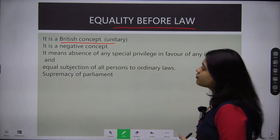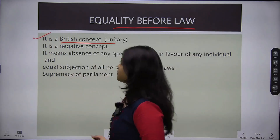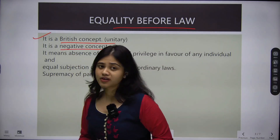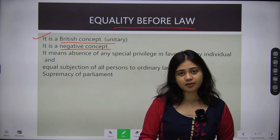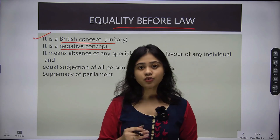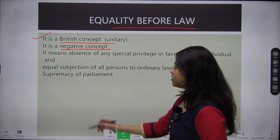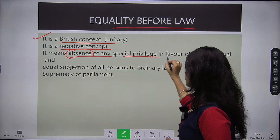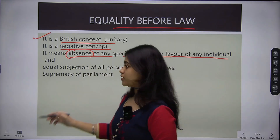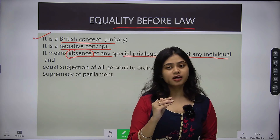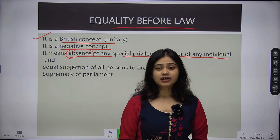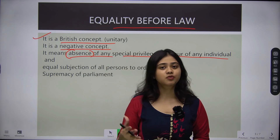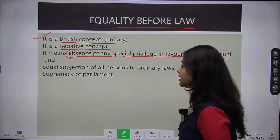Equality before law, as I said, is a British concept from a unitary form of government, and it is a negative concept. Negative concept means the absence of any special privilege in favor of any individual — kisi bhi tariqa ka special privilege kisi bhi individual ko nahi milega. This is why we call it a negative concept.